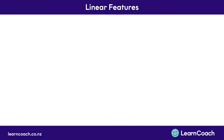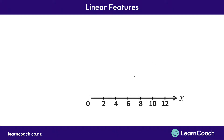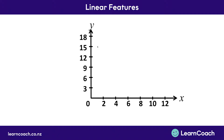Welcome to Linear Features. A linear graph is a straight line graph, one that doesn't have any curves in it at all. All graphs have a horizontal axis called the x-axis that runs straight across the page, and vertically upwards is the y-axis. A linear graph will just be a straight line that goes through these axes.